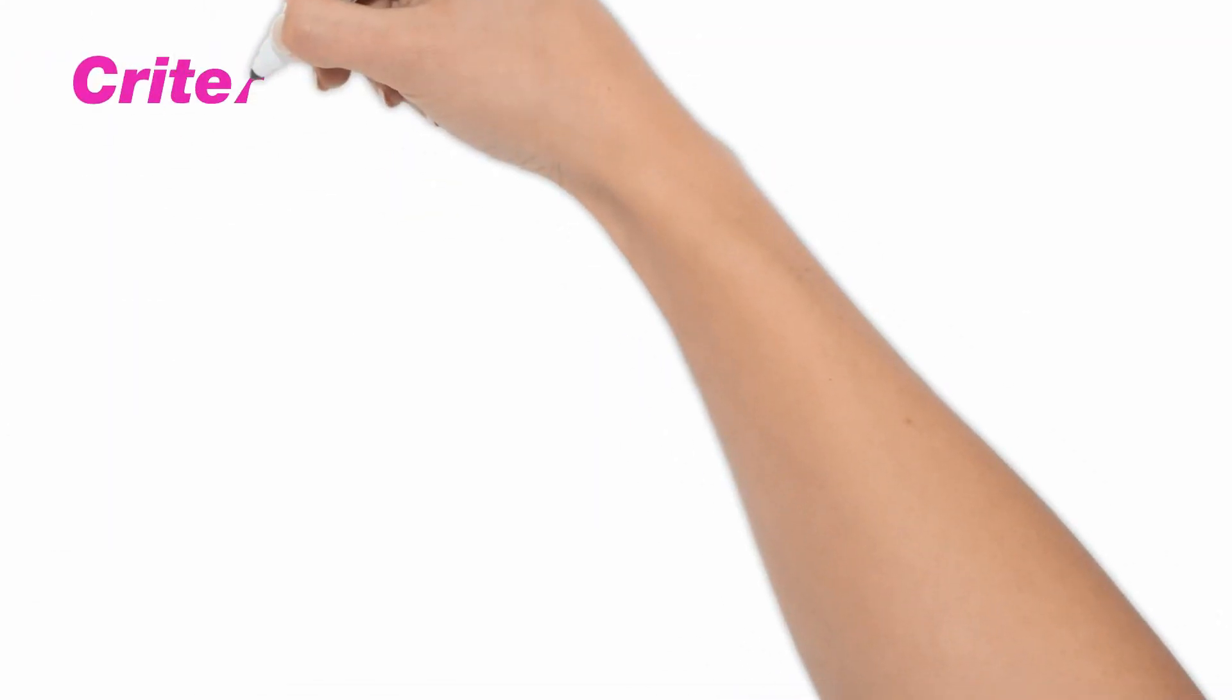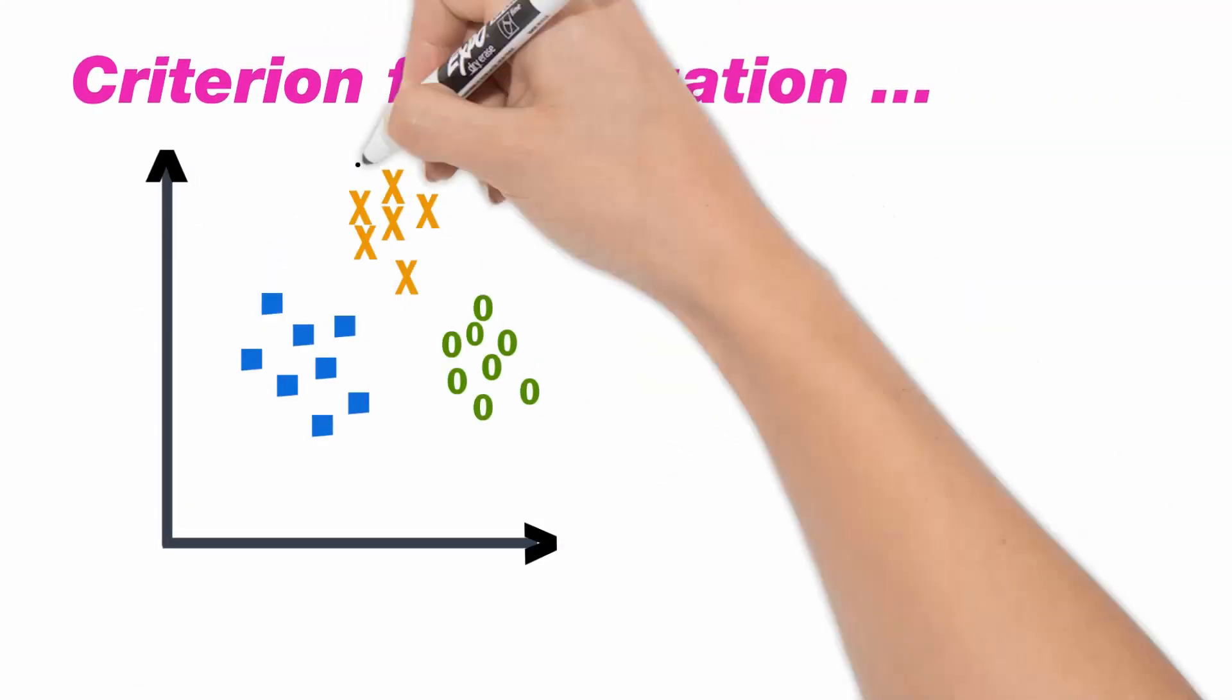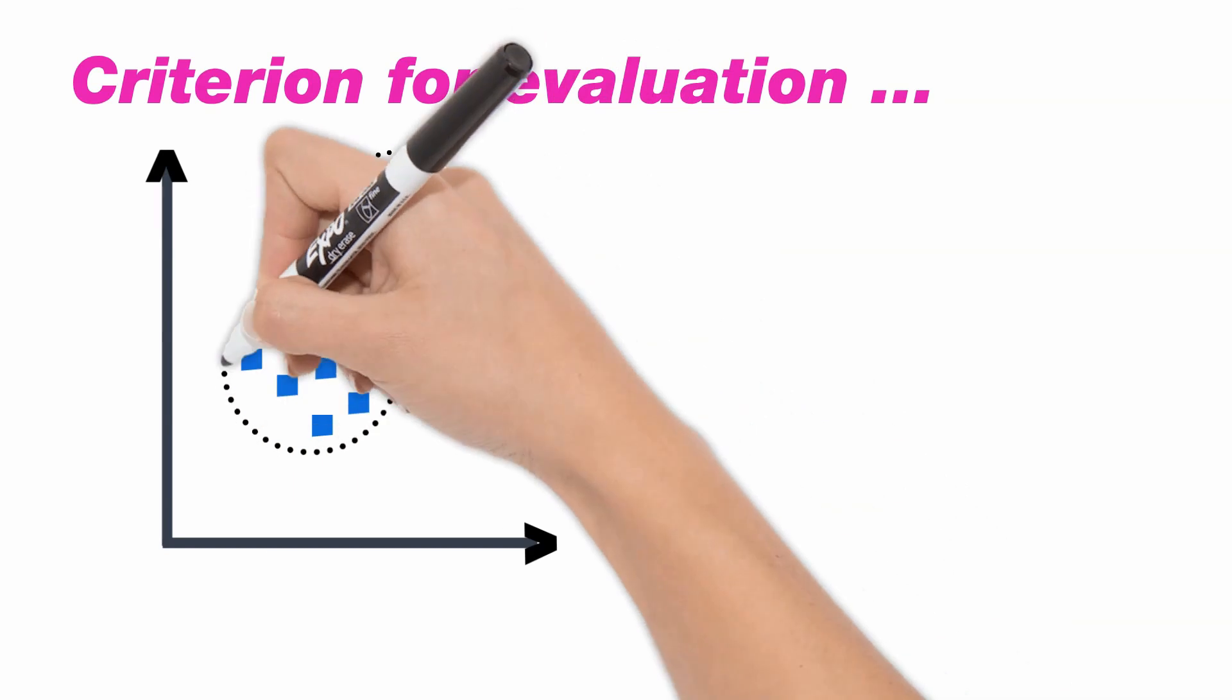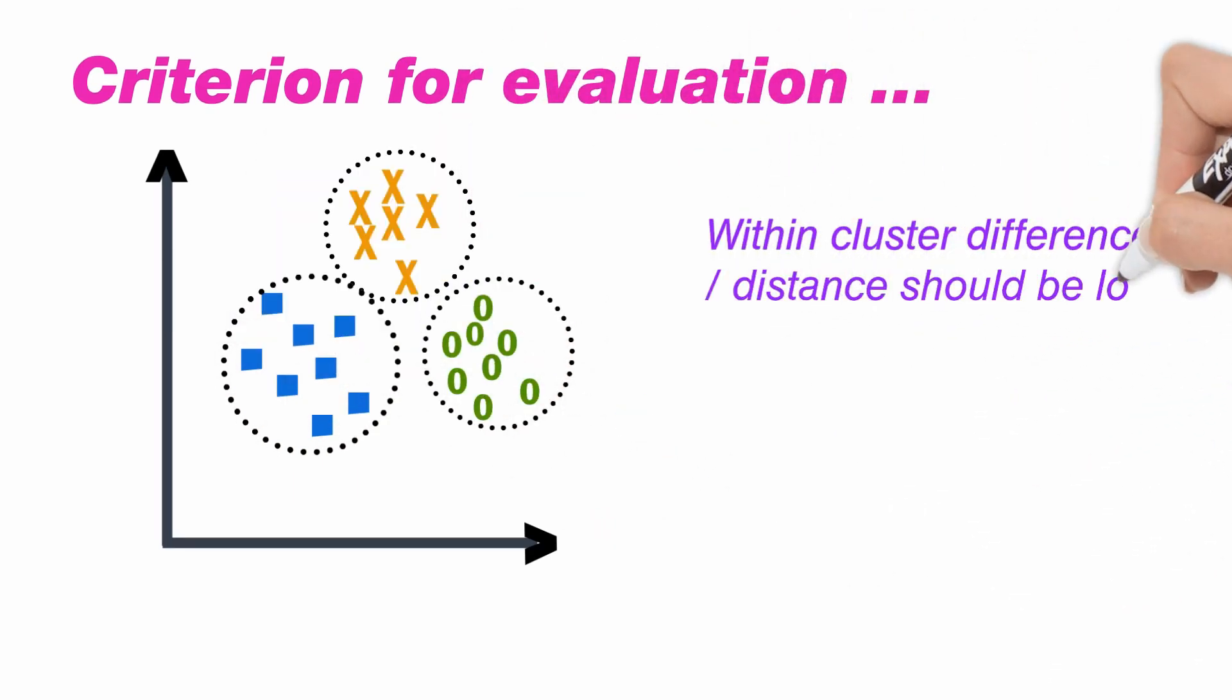Once the cluster analysis is run, we evaluate the validity or performance of the clusters based on two points. First, within-cluster distance should be low to ensure high similarity or cohesion. Second, between-cluster distance should be high to ensure high differentiation.